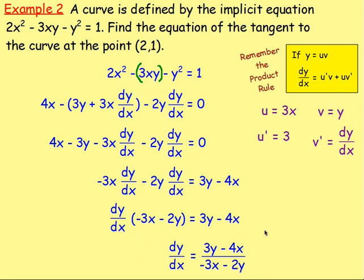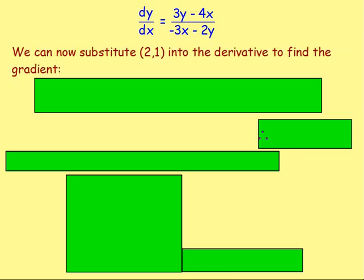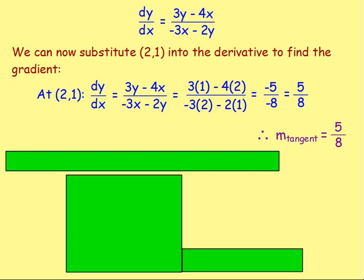Thinking back — we want the equation of a tangent, which is a straight-line gradient point equation. The gradient is what we're wanting to find, and you'd do that by subbing in the point 2, 1 into the equation for the gradient. So, replace X with 2 and replace Y with 1 — that gives us negative 5 divided by negative 8, which becomes 5 over 8. That means the gradient of this tangent is 5 eighths.